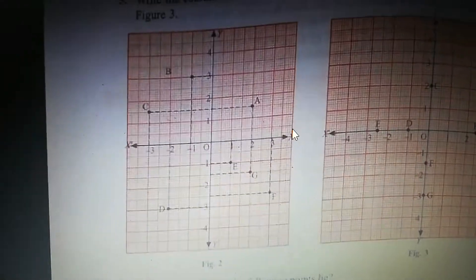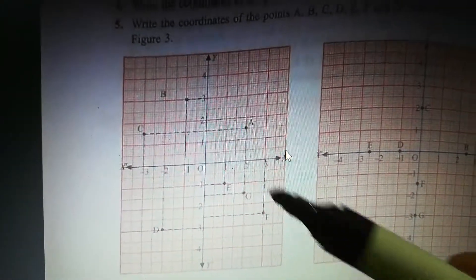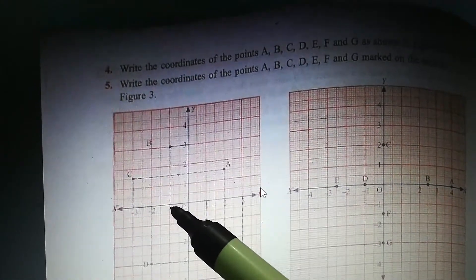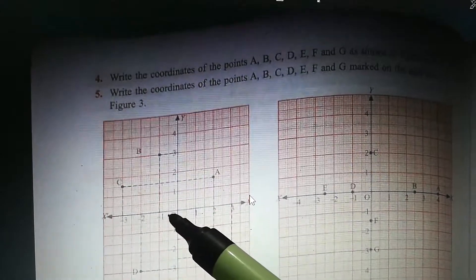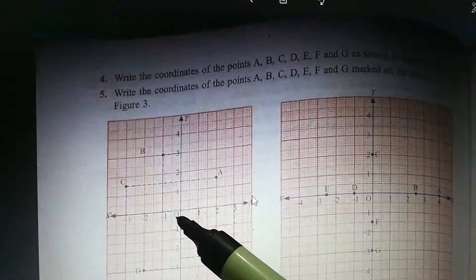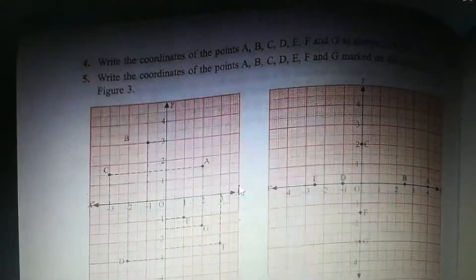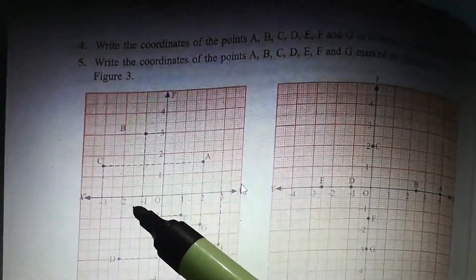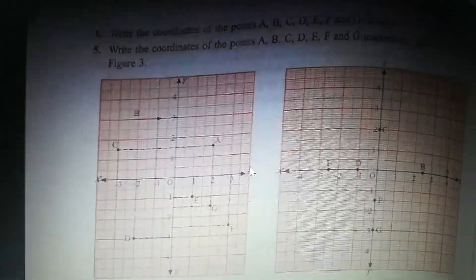Next one, B. B is on the top, so B, you can see here B, it's coming to here. So X is, how much here? X is minus 1 and Y is 3.